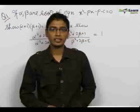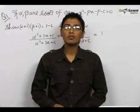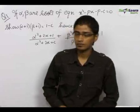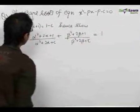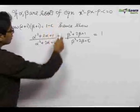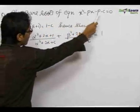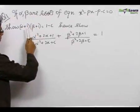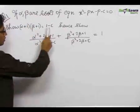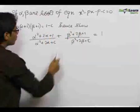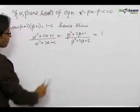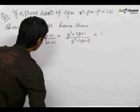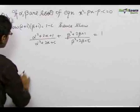In math, we would be starting with the basic and most important chapter of algebra, which is quadratic equations. Our first question says: if alpha and beta are the roots of the equation x² - px - p - c = 0, then we need to show that (alpha + 1)(beta + 1) = 1 - c, and hence show that (alpha + 1)² / (alpha² + 2*alpha + c) equals 1.